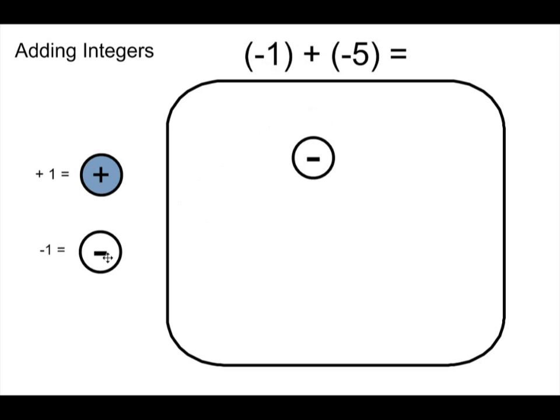The math tells me to add that together with five negatives. So I'll put these guys over here. One, two, three, four, five negatives. What have I got inside my workspace here in my square? I've got six negatives.